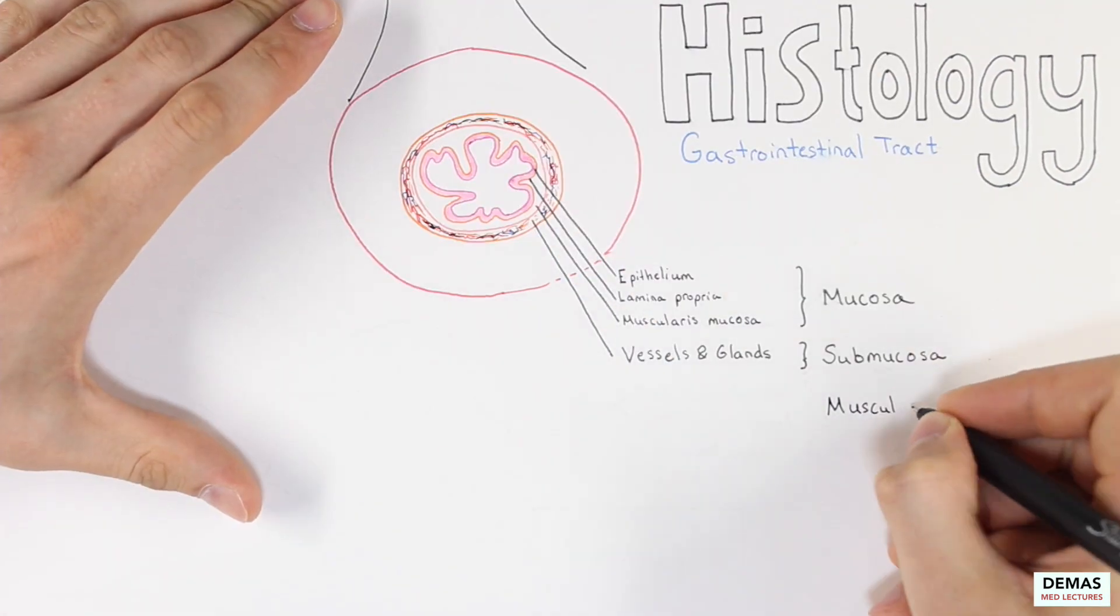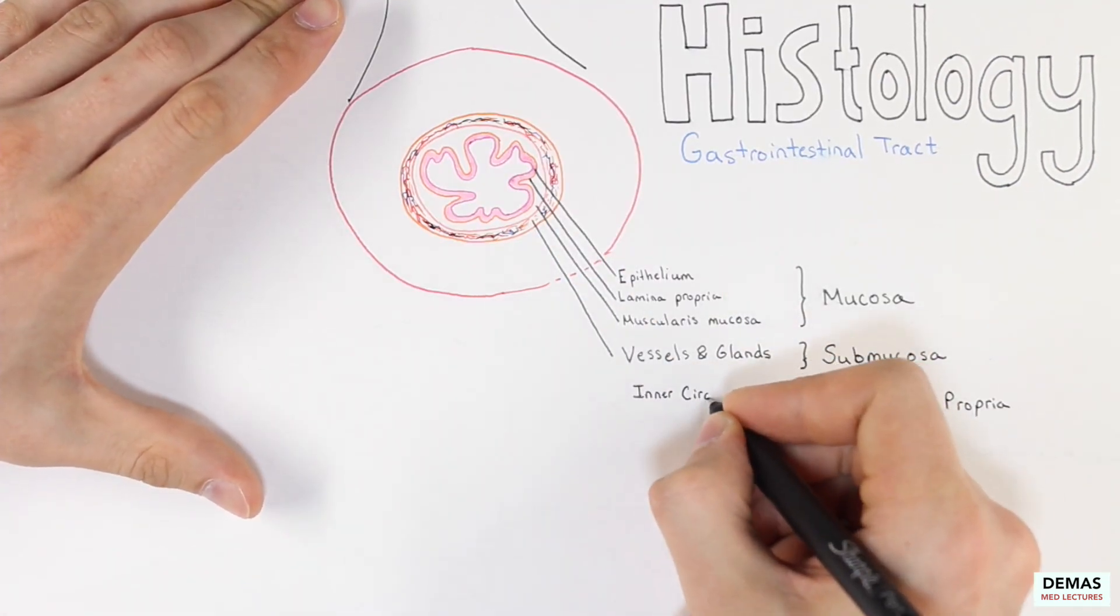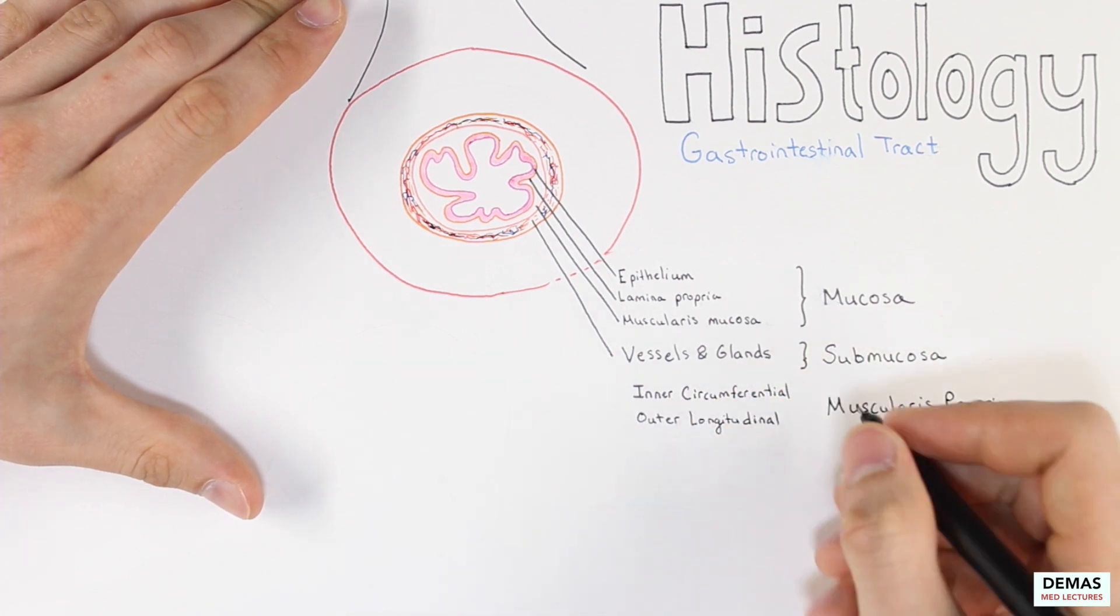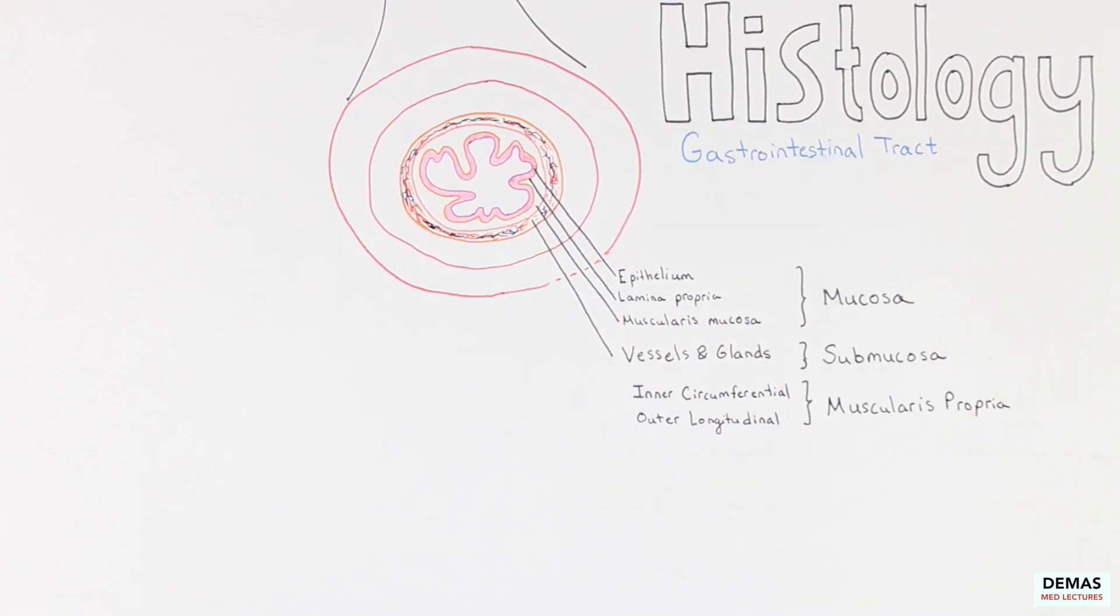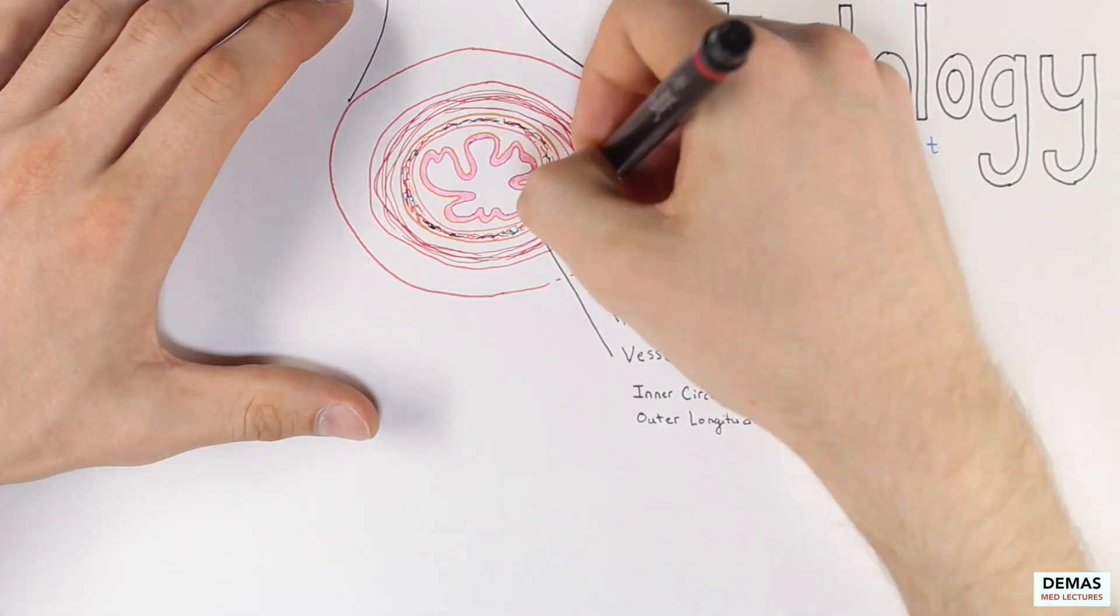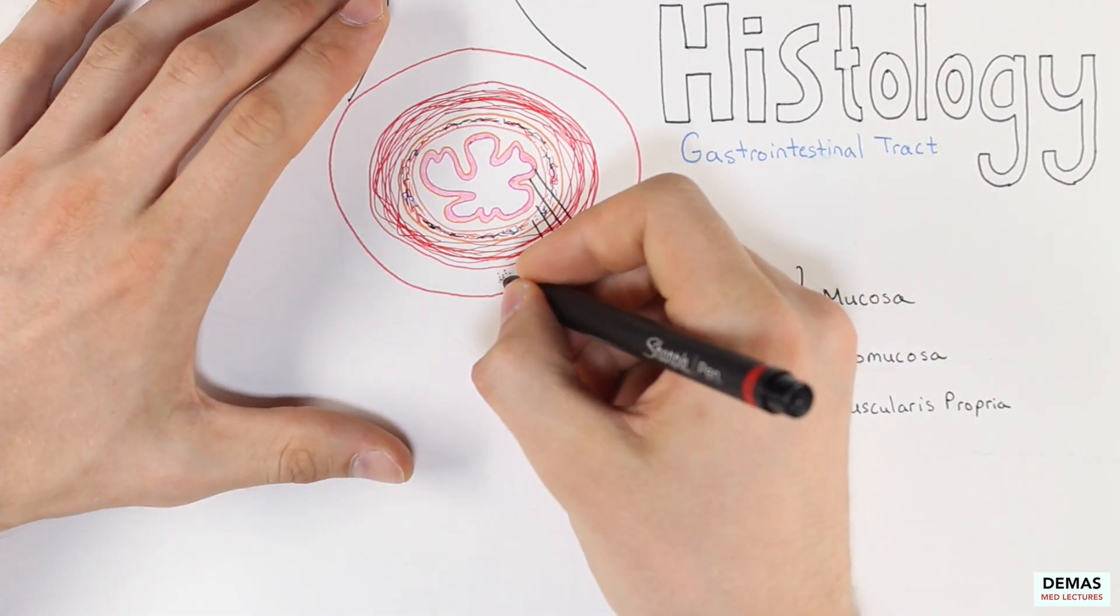The third main layer is the muscularis propria, which contains two layers of muscle that run perpendicular to each other. The inner layer runs circumferentially, while the external layer runs longitudinally.